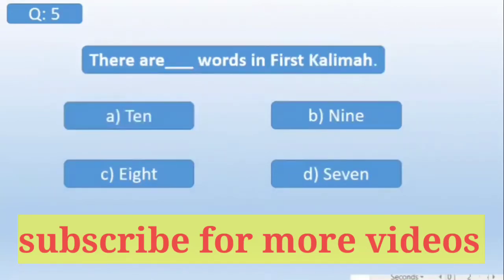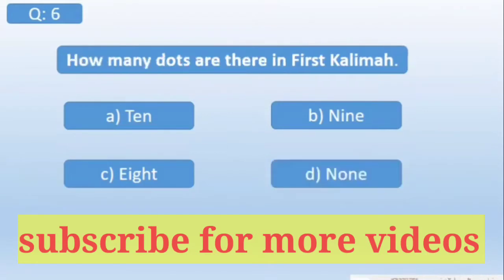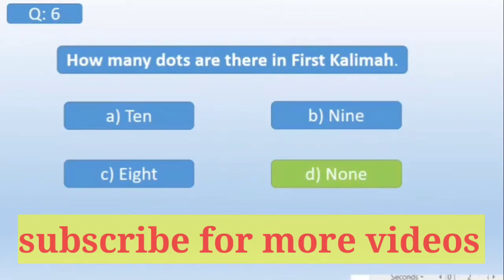There are dash words in the first Kalma. The answer is 7. How many dots are there in the first Kalma? The answer is none.